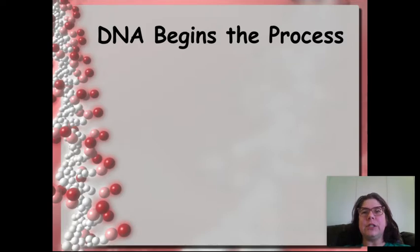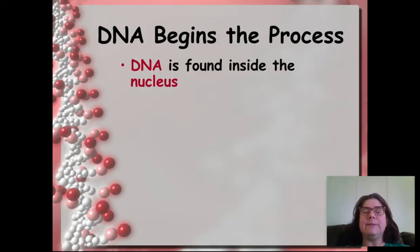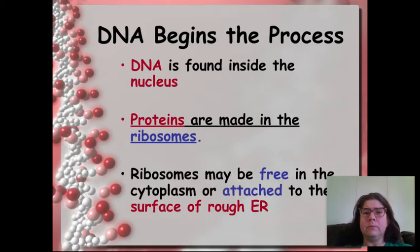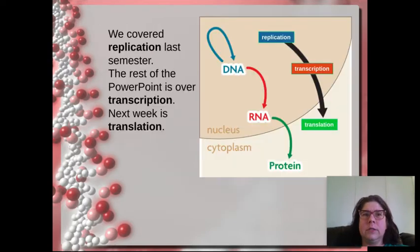So remember DNA is the instructions. It begins the process. It's found inside the nucleus. Now, proteins though, they're made from these instructions, but they're made at the ribosomes. And so that's a big problem. Ribosomes may be free in the cytoplasm, which is that jelly-like substance, or it's attached to the surface of rough ER. And all that does is it's another organelle in the cell and it helps transport the proteins to where they need to go, especially if they're going to be exiting the cell.